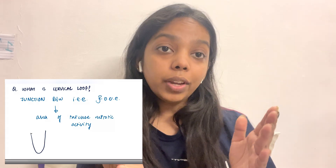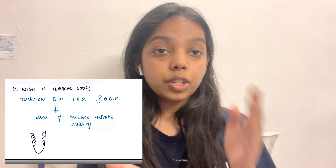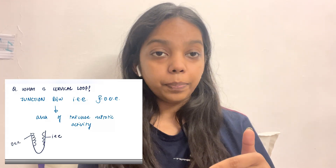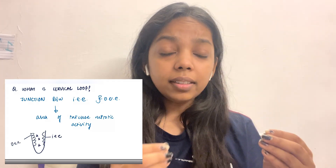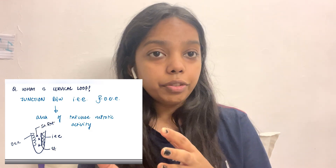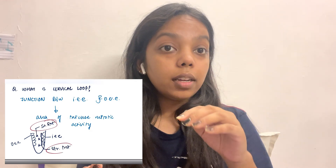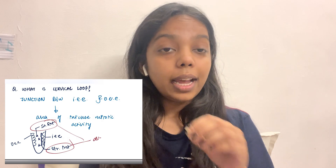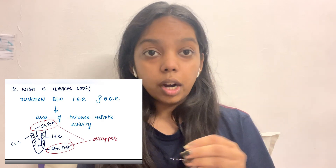What is the cervical loop? It is present in the cervical portion of the tooth and is a junction between the outer enamel epithelium and the inner enamel epithelium. In between, we can also see the stellate reticulum and the stratum intermedium. Later, the stratum intermedium and the stellate reticulum disappear, giving rise to HERS — Hertwig's Epithelial Root Sheath.